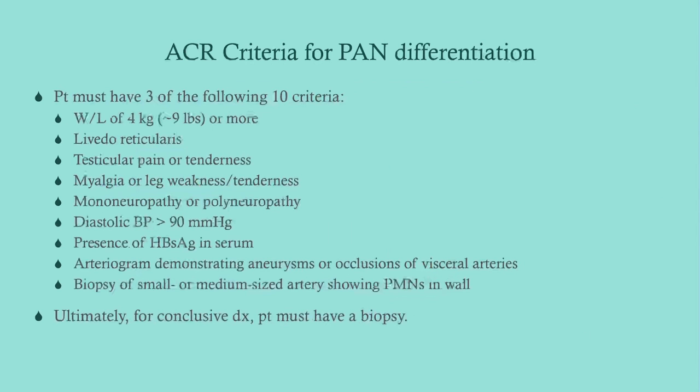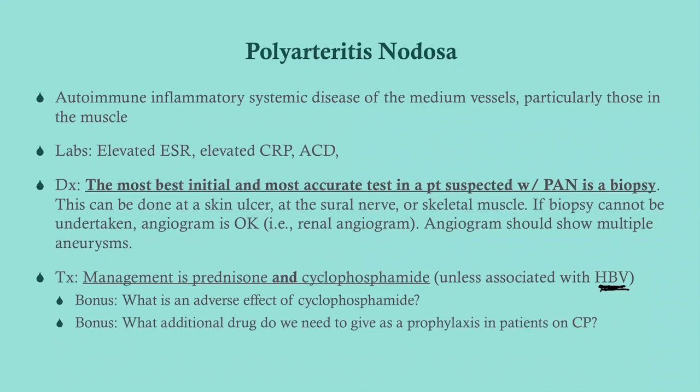Treatment for polyarteritis nodosa is prednisone and cyclophosphamide. To clarify the management across conditions: Wegener's and microscopic polyangiitis — prednisone and rituximab; Churg-Strauss/EGPA — prednisone alone; polyarteritis nodosa — prednisone and cyclophosphamide. We try to avoid cyclophosphamide generally because it hits the immune system and can cause bladder issues, but we use it here. Exception: if the patient has hepatitis B, substitute a hepatitis B antiviral like lamivudine instead of cyclophosphamide.